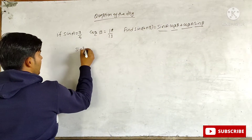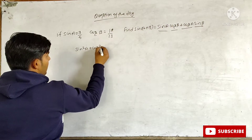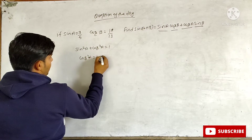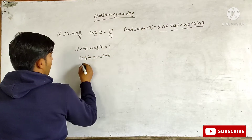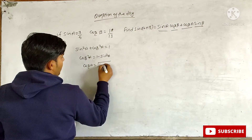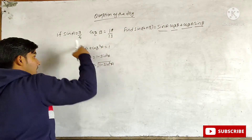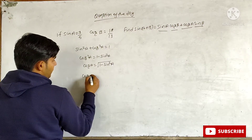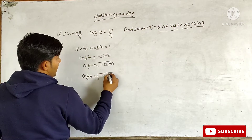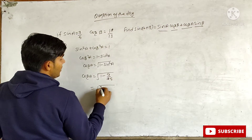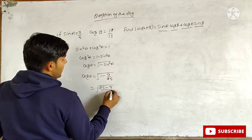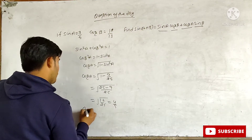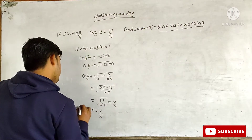We know that sin²A + cos²A = 1. From here, we can find cos A. Cos A equals the square root of (1 − sin²A). Putting sin A = 3/5, cos A equals the square root of (1 − 9/25), which is the square root of (16/25), giving cos A = 4/5.